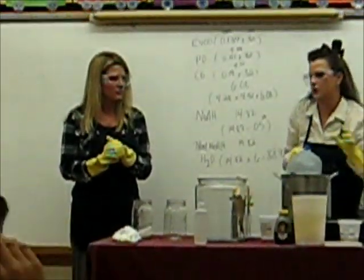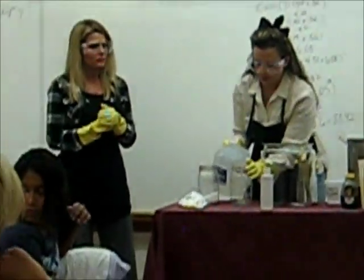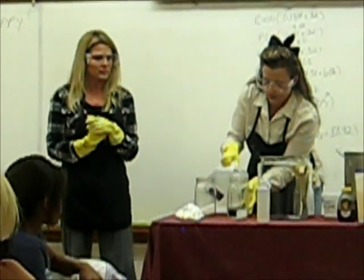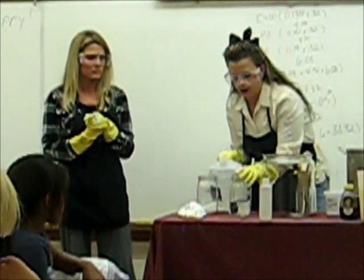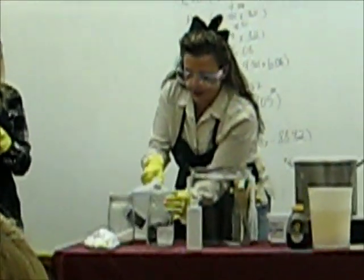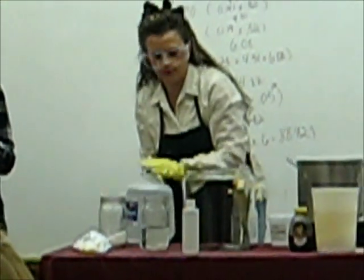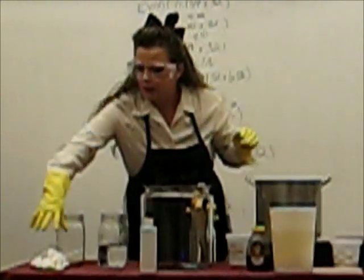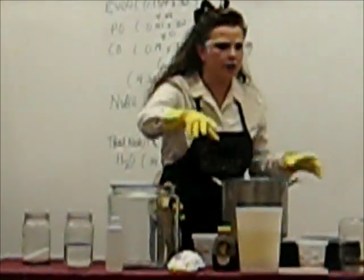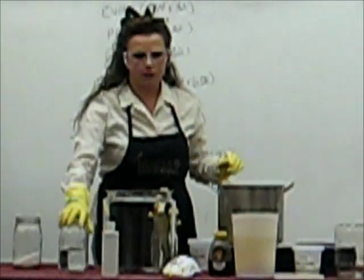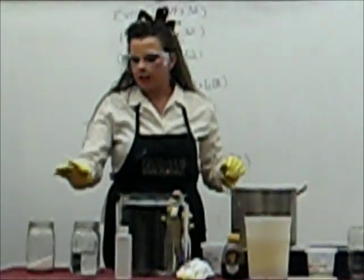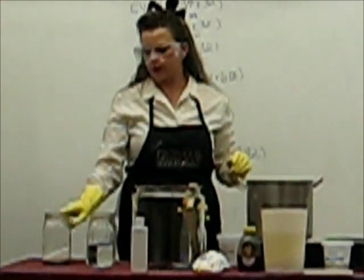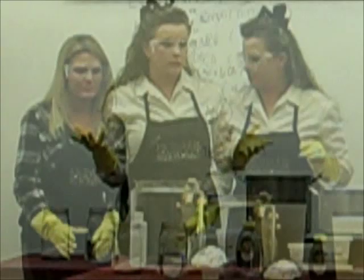We're going to start out by mixing the alkaline into the water. We have the sodium hydroxide in a separate container and distilled water in another container. This is very important because this is going to create a chemical reaction — it's not going to be exploding or anything like that. But when we mix this together, it's important that the sodium hydroxide is poured into the water, and not the water into the sodium hydroxide. If you were to pour the water into the sodium hydroxide, it would cause it to blow up out of the glass.